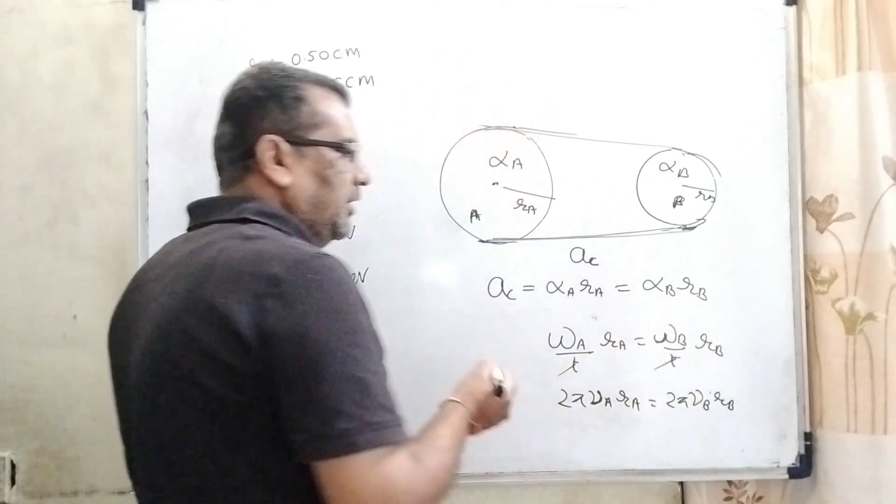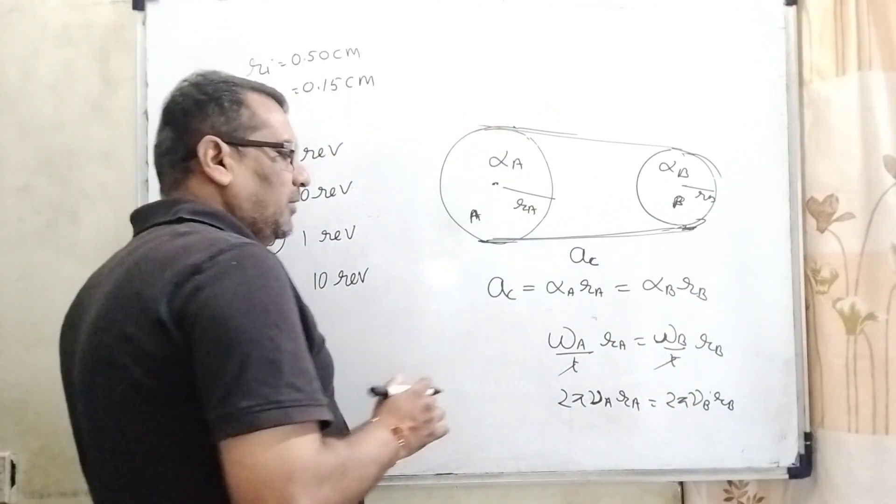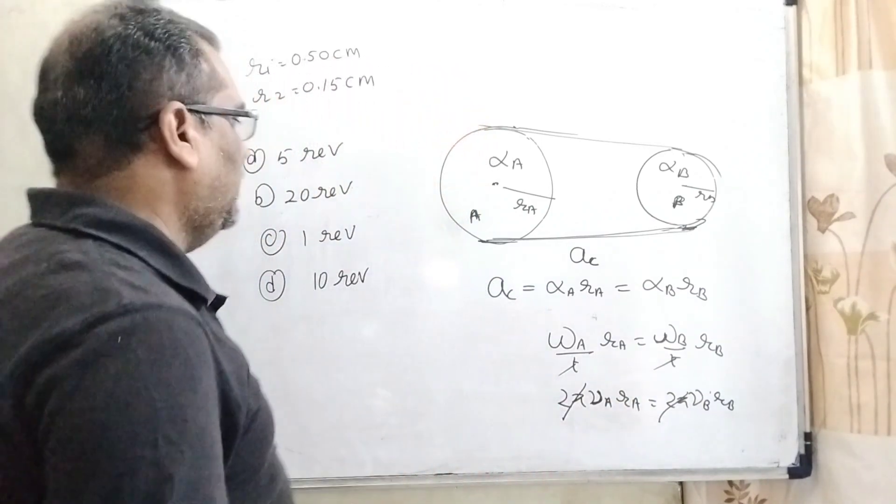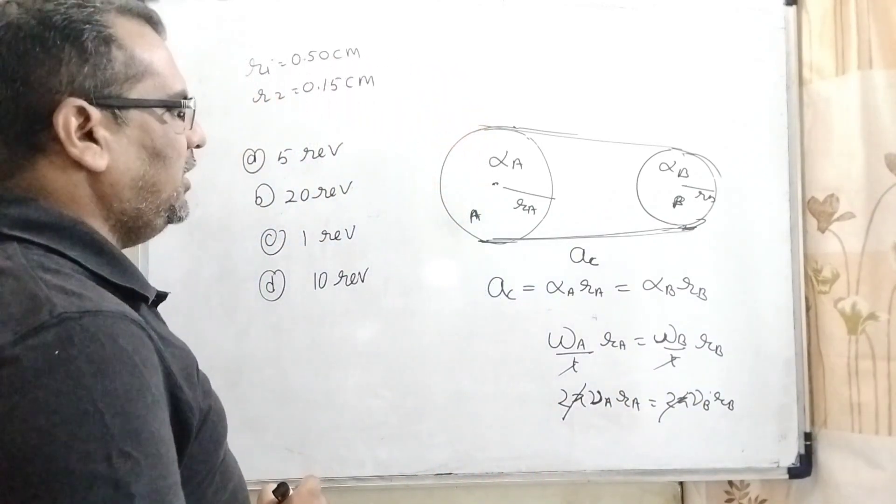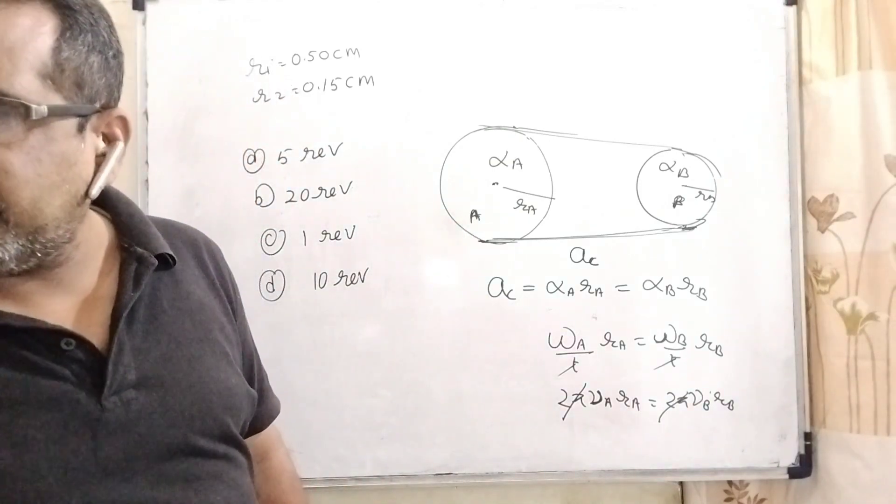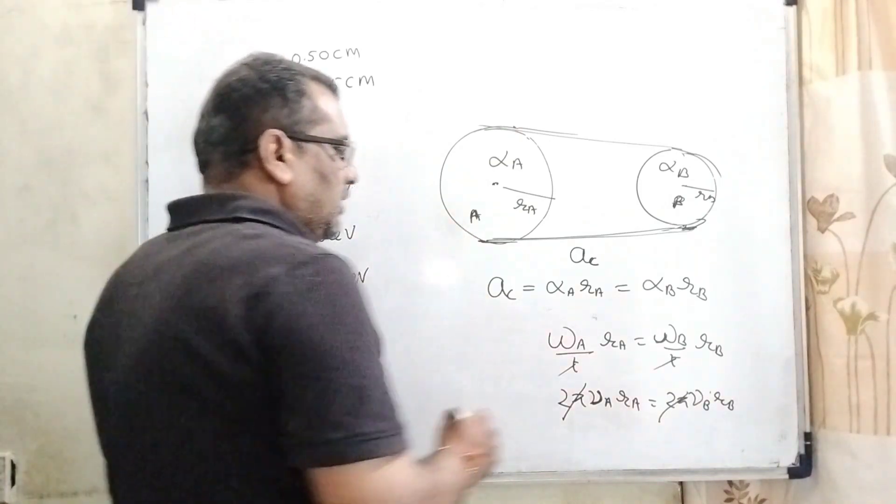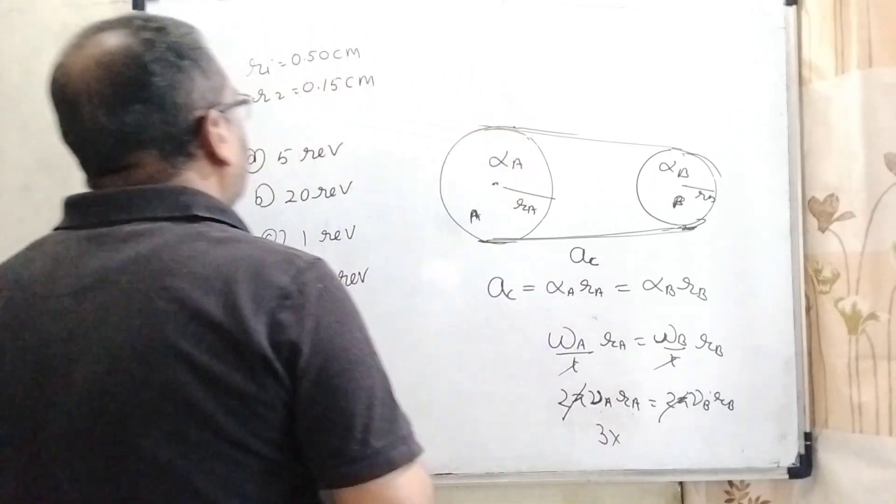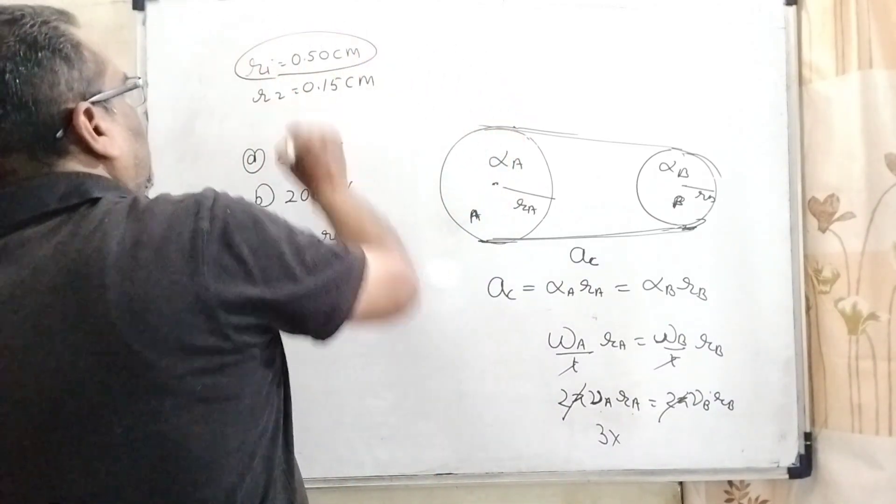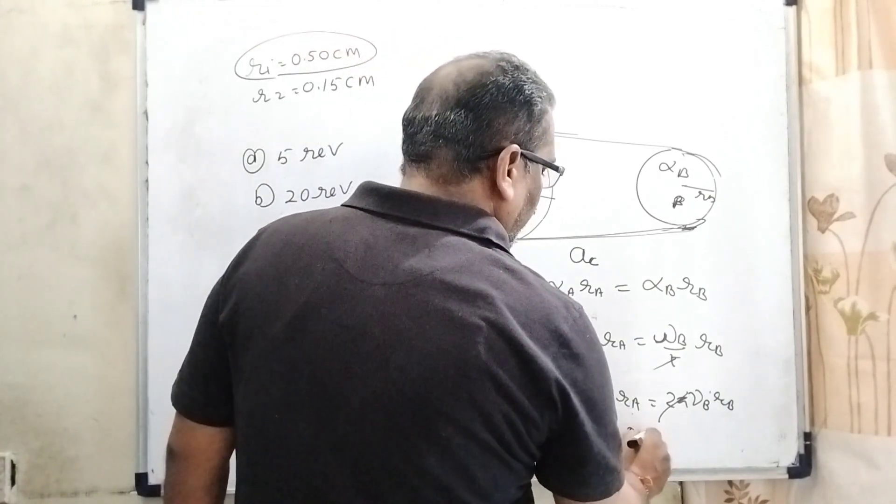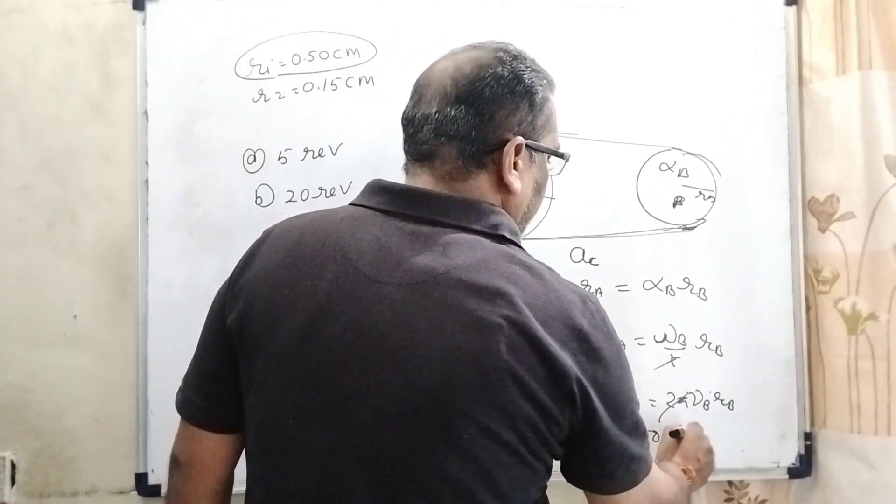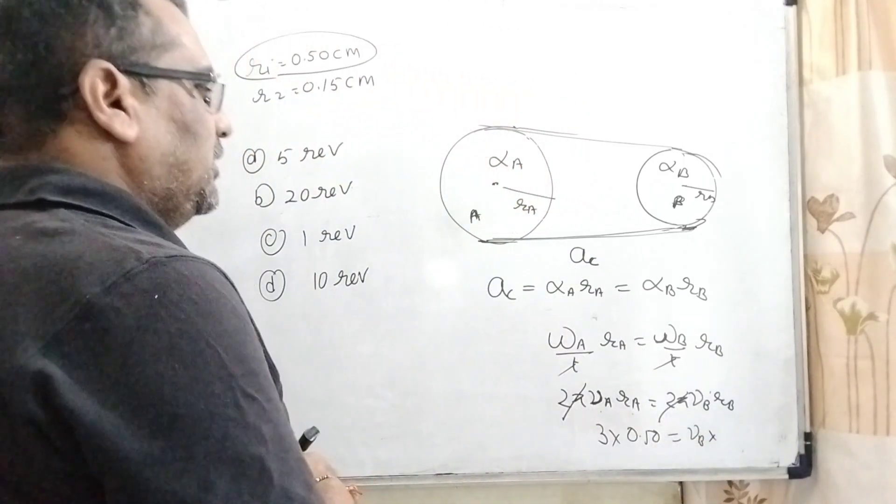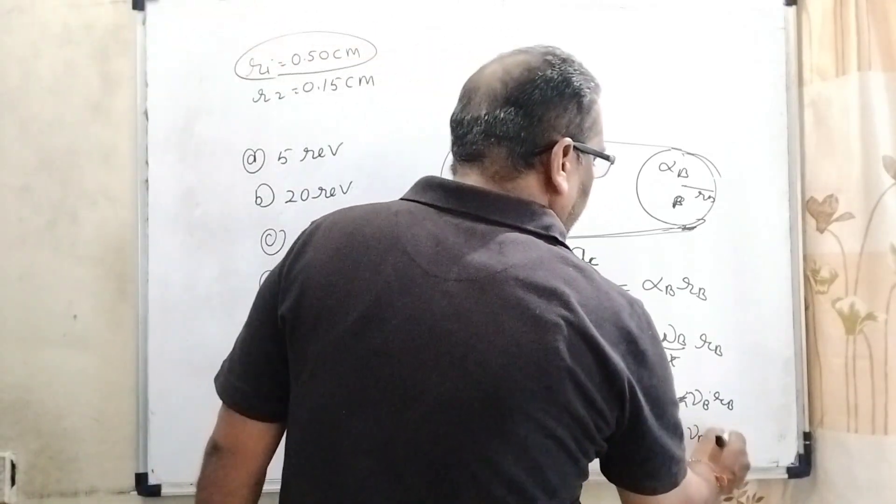You can write frequency denoted by F also. 2 pi cancels out. Here, the frequency for the first gear is already given in the question, that is 3 revolutions. So here, 3 revolutions and the radius for larger gear is 0.50 and we have to find out nu B and the radius for the smaller gear is 0.15.